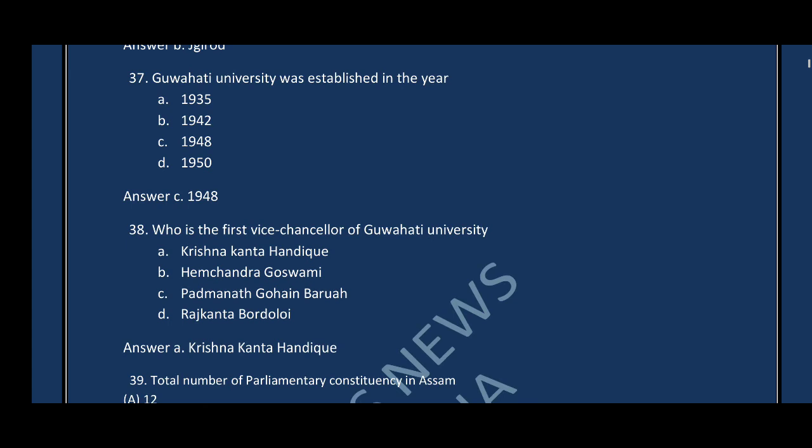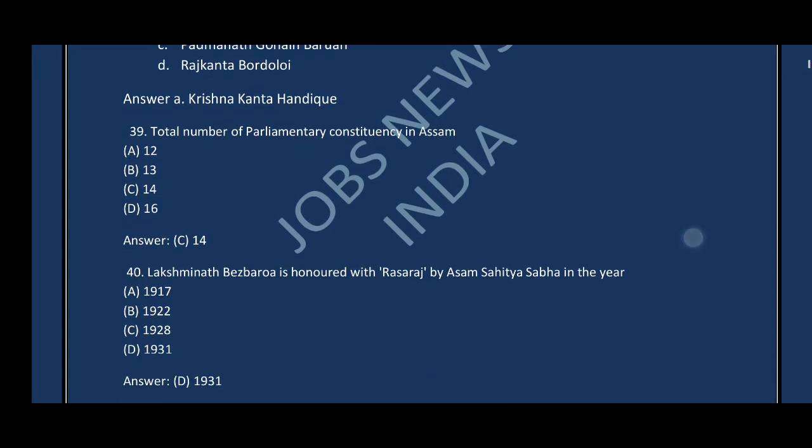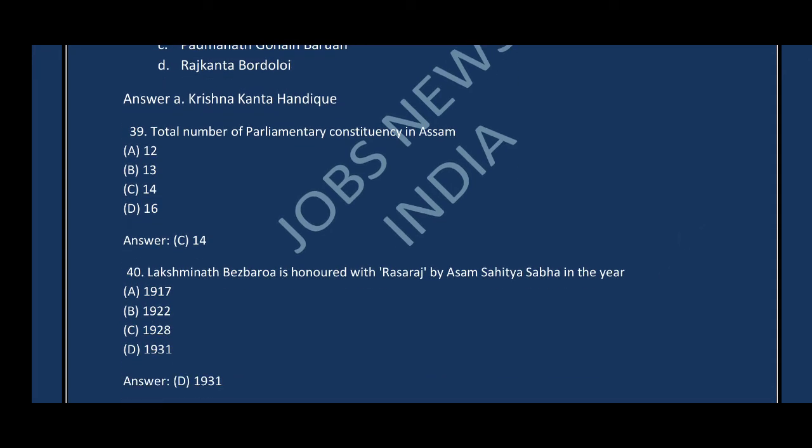Question number thirty-eight: Who is the first Vice-Chancellor of Guwahati University? The correct answer is option E — Krishnakanta Handiqui. Question number thirty-nine: The total number of parliamentary constituencies in Assam — the correct answer is option C, 14.